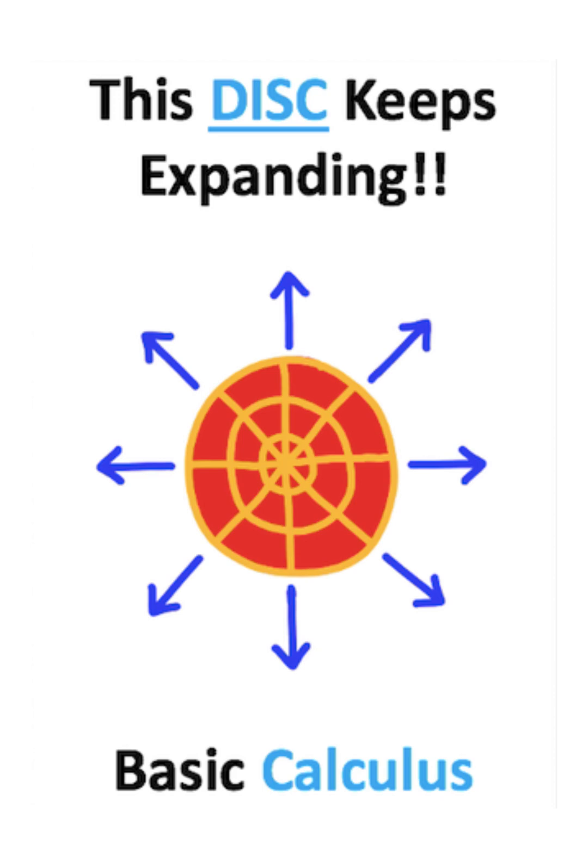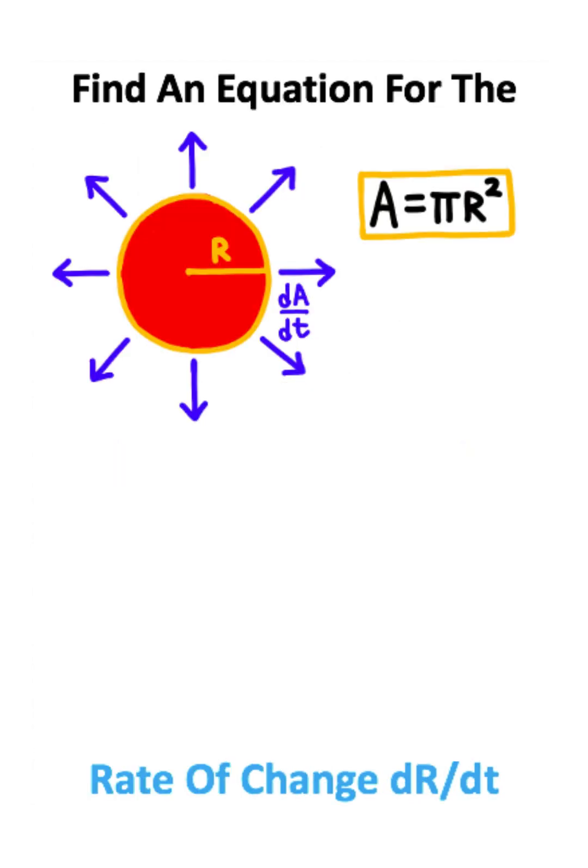This calculus problem is quite difficult. So here we have a disk, and this disk is continually expanding. What we want to do is find an equation for the rate of change for the radius.